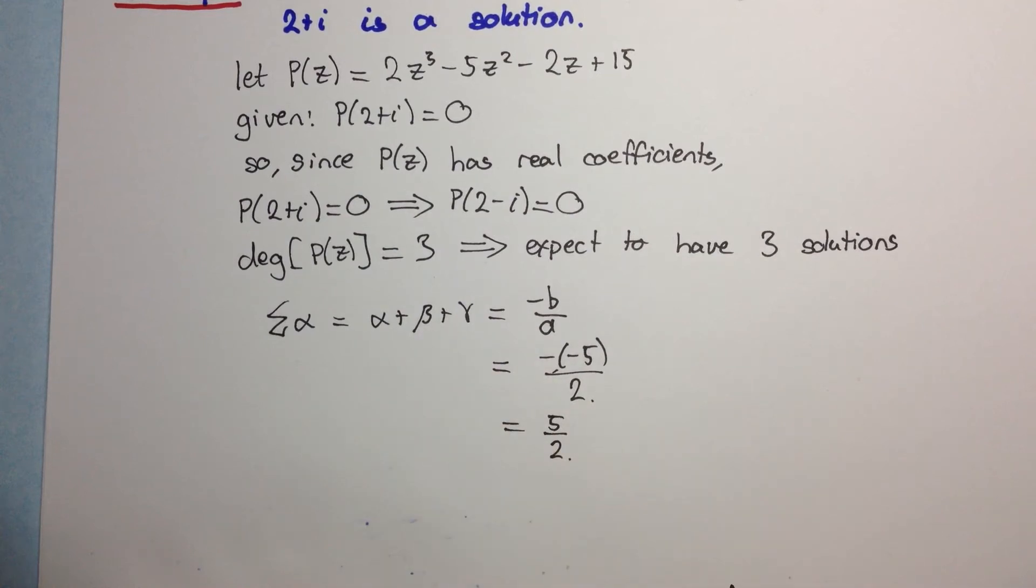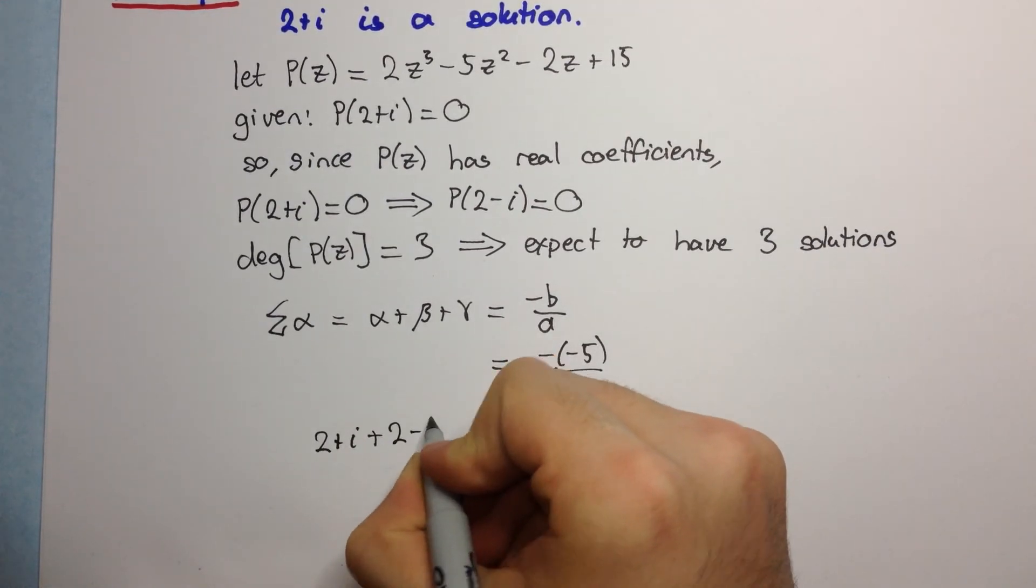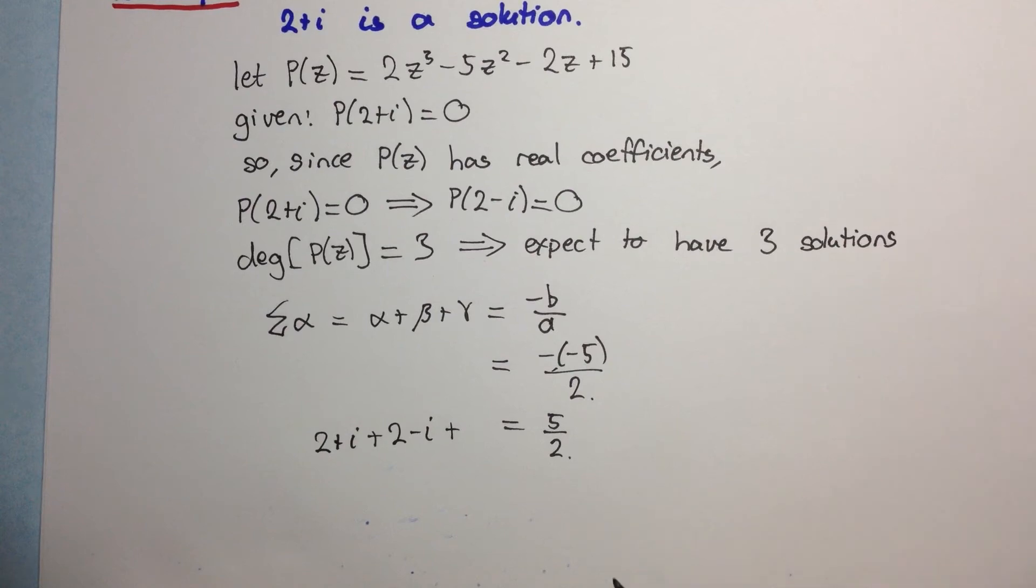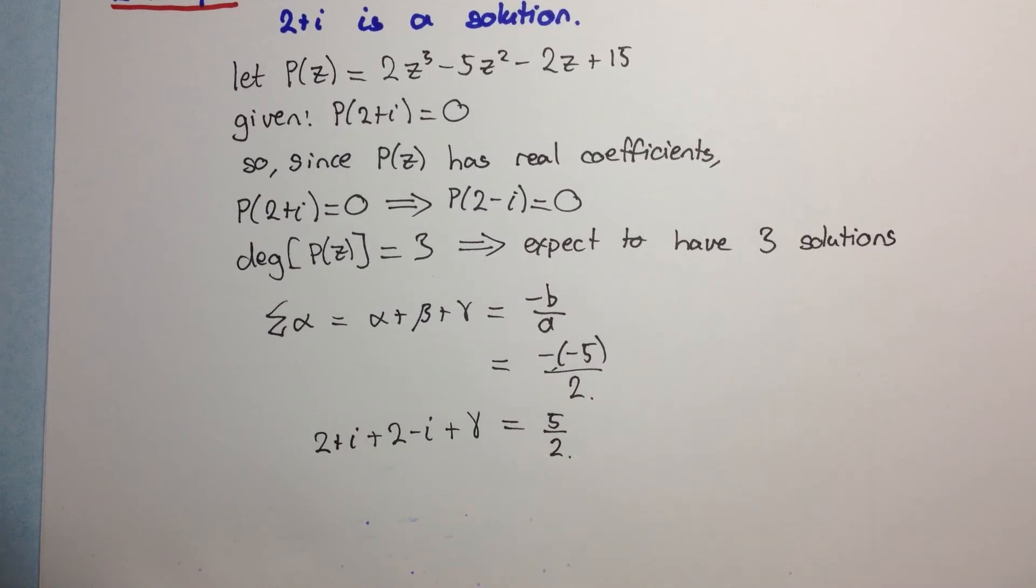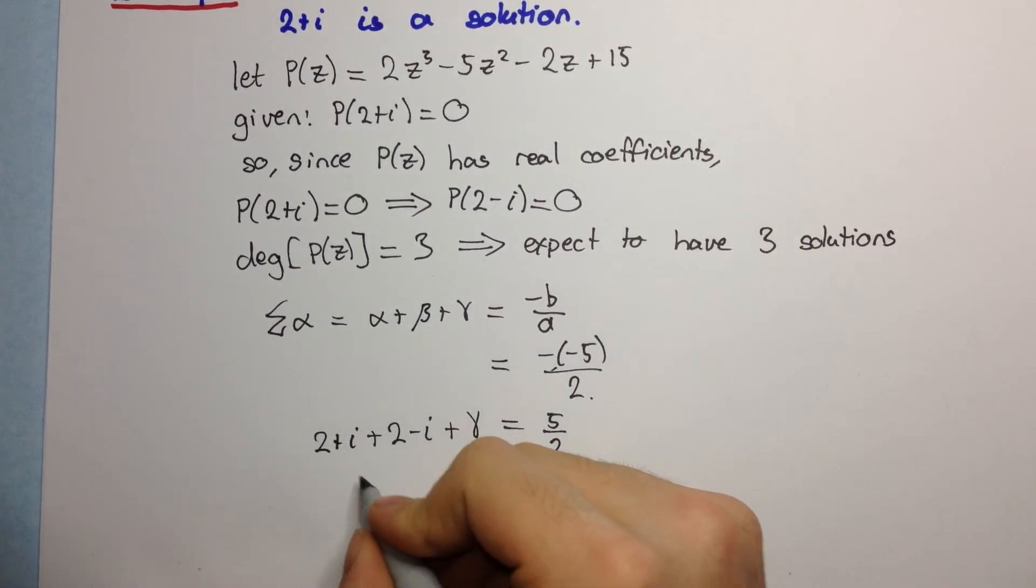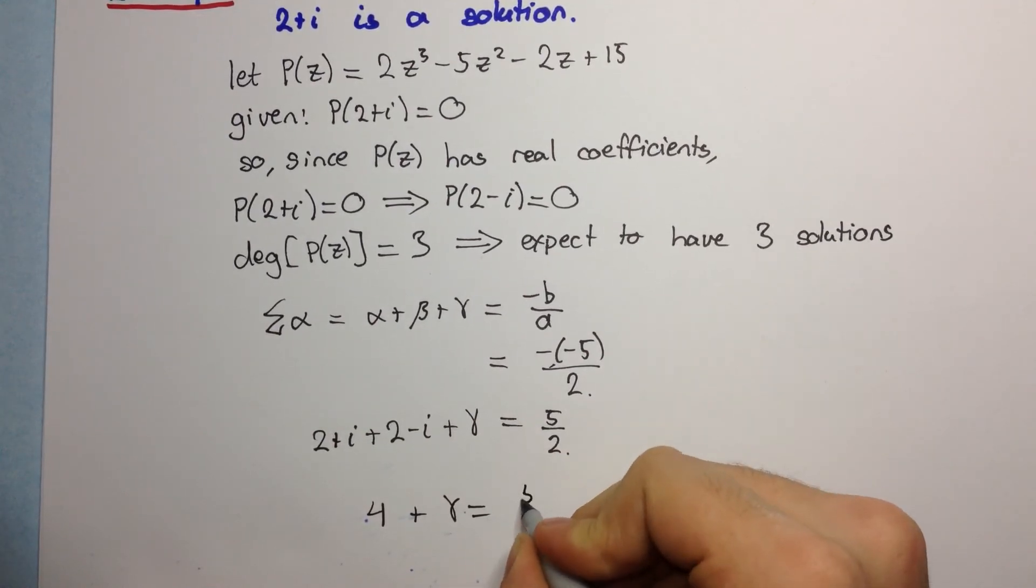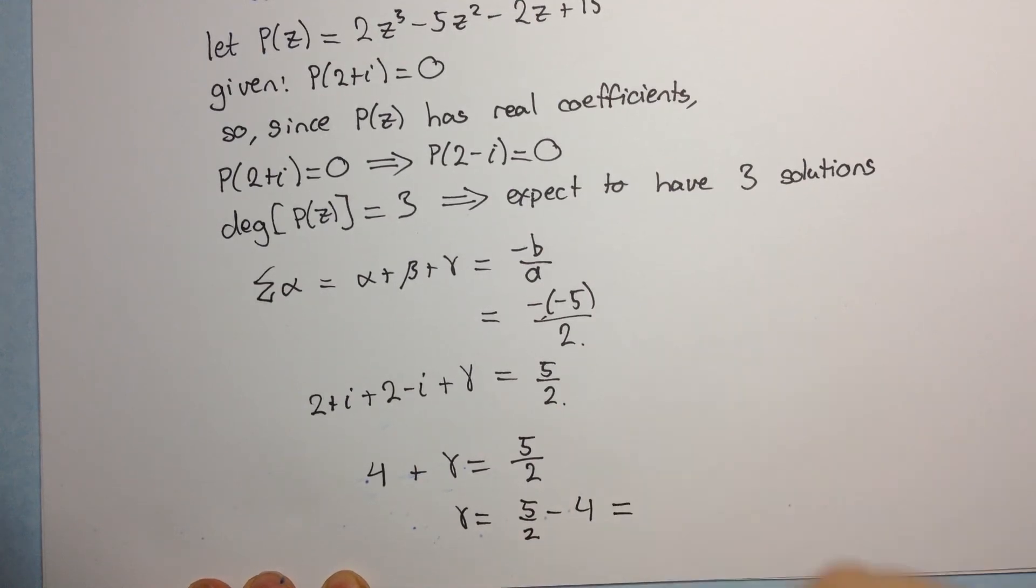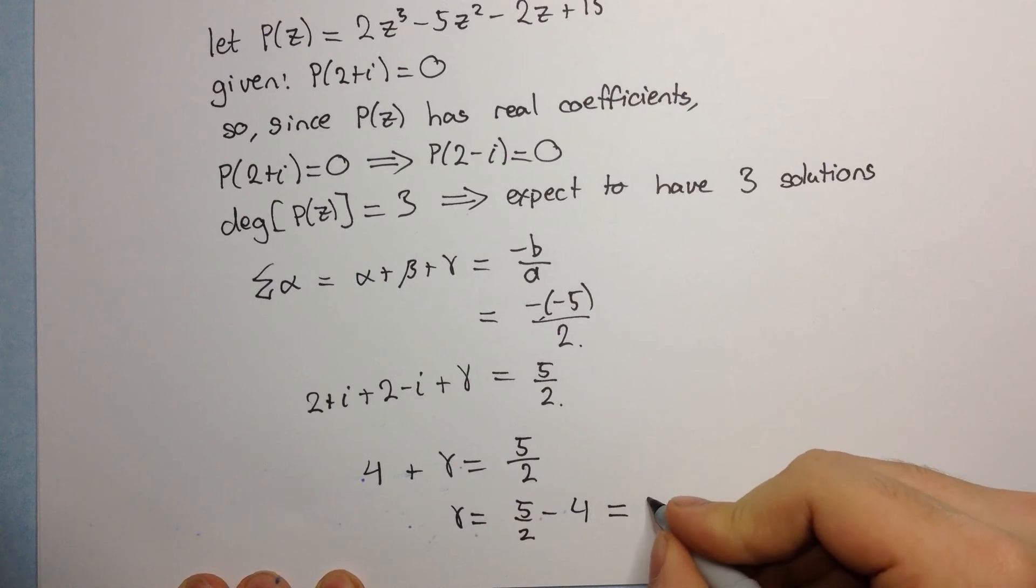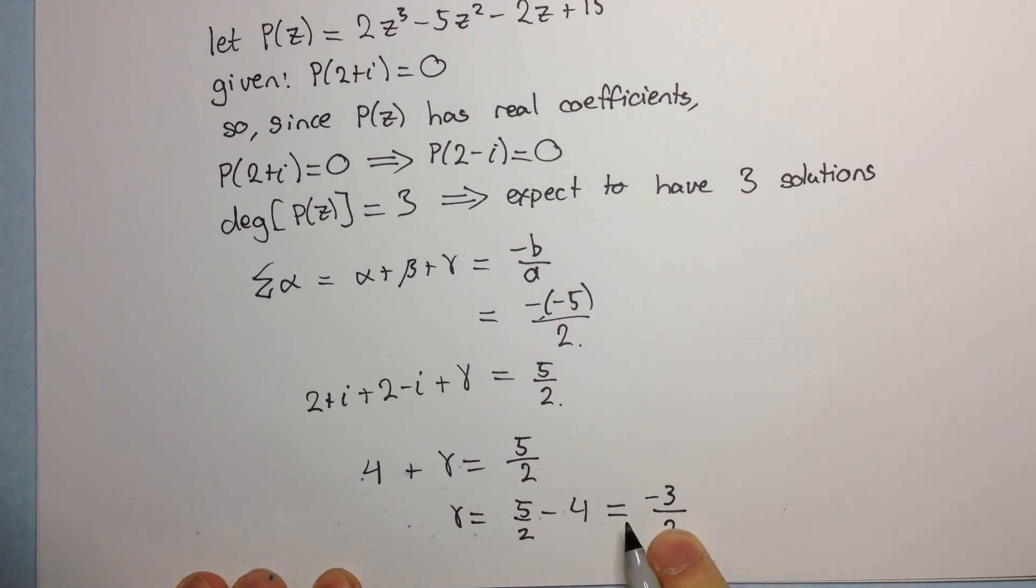But, this is the sum of the roots. So, we already know that 2 plus i is a root and 2 minus i is a root, but now we're just left with one remaining root and let's just call that gamma. Now we can simplify this and we'll get 4. These two i's will cancel. So, 4 plus gamma equals 5 on 2 and then gamma equals 5 on 2 minus 4 which equals minus 3 halves, and so that's your last remaining root of this equation.